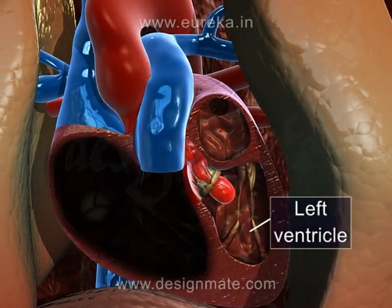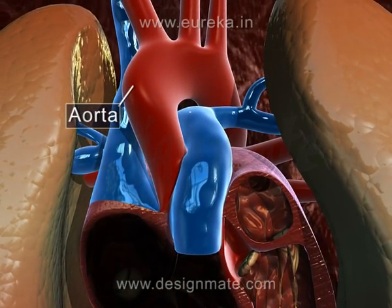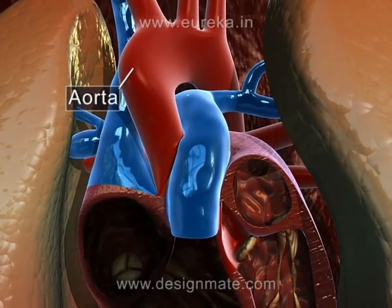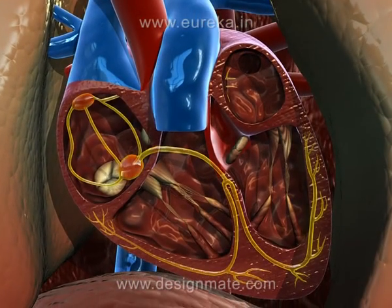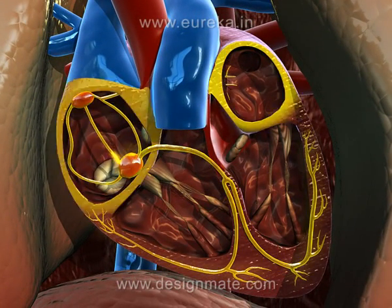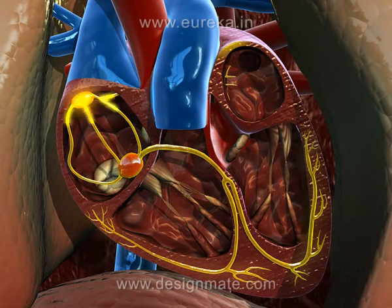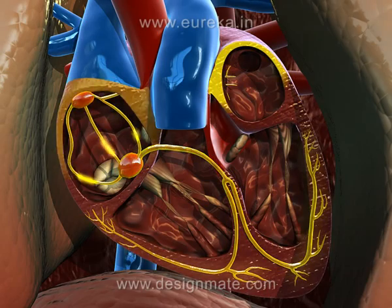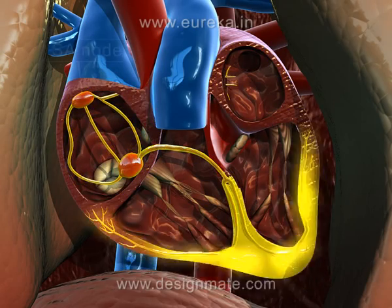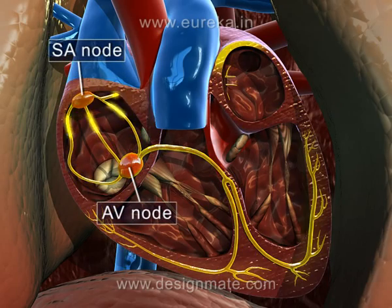During ventricular contraction, the blood pushes its way into the aorta, from where it goes to various parts of the body. Heart muscles continuously generate impulses, which cause the rhythmic contraction and relaxation of the atria and the ventricles. These impulses are generated by the sinoatrial and auriculoventricular node.